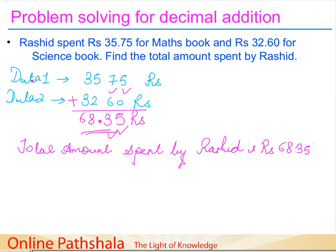This is how we deal with a word problem: first write the data, then add the values to find the total sum. Finally, write the answer as a complete statement: the total amount spent by Rasheed is rupees 68.35.